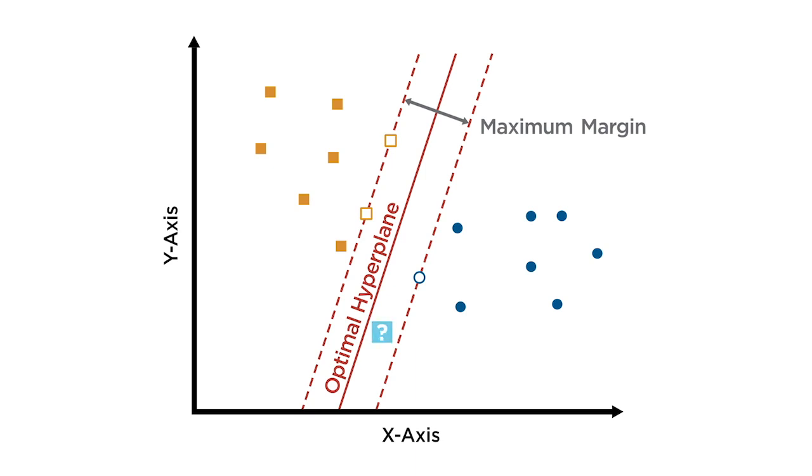A point inside the margin, but correctly classified, is called margin error. A point on the wrong side of the separating boundary is a classification error. The total error is the sum of the margin error and the classification error.